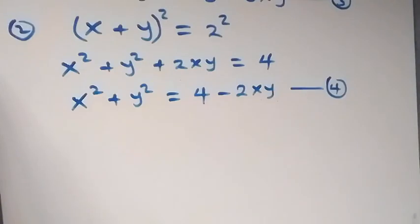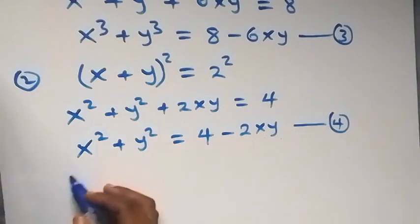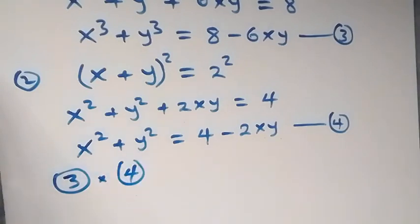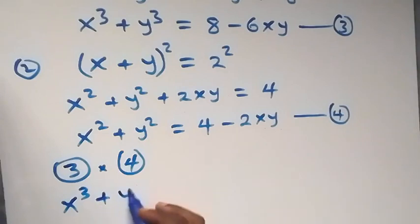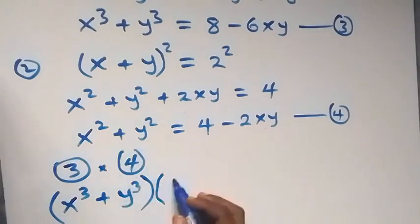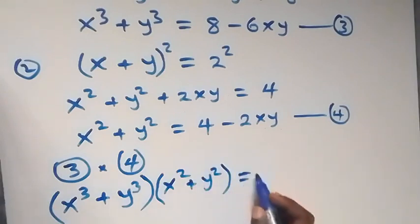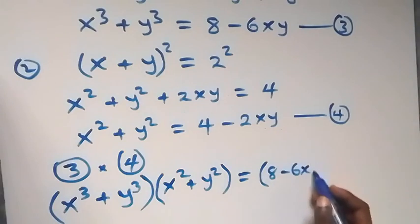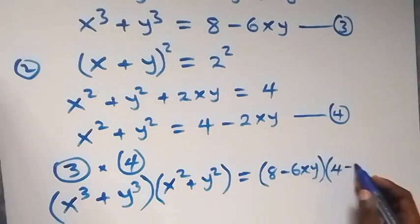The next step is to multiply equation 3 and equation 4. So equation 3 multiplied by equation 4: the left-hand side of equation 3, x raised to power 3 plus y raised to power 3, multiplied by the left-hand side of equation 4, x squared plus y squared, equals the right-hand sides: 8 minus 6xy multiplied by 4 minus 2xy.